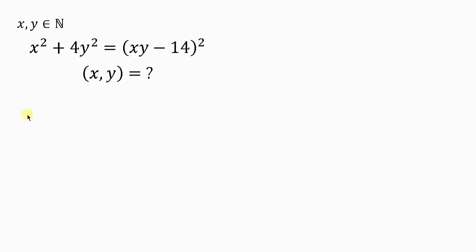Welcome back to my YouTube channel. Look at this nice and beautiful question on the board that we're going to be solving. The question says: for natural numbers x and y, find the value of x and y such that x squared plus 4y squared is equal to (xy minus 14) all squared.